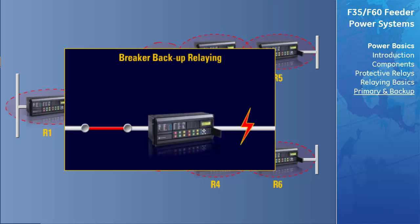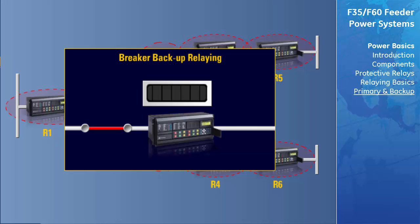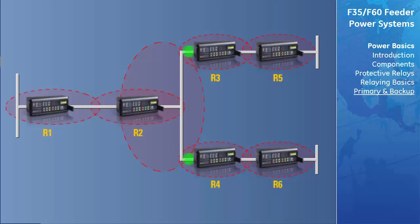Let's look at an example of a breaker failure protective element. In this example, the protective relays operate correctly, but the associated circuit breaker fails to clear the fault because of some malfunction within the breaker or its control circuits. The fault will remain on the system until some other means is used to clear it. The primary or backup relays start a timer once a fault has been detected, and the timer will time out and send a trip signal to all breakers that can feed the failed breaker with power.